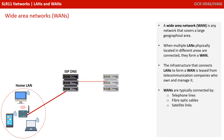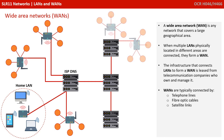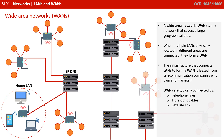A wide area network, or a WAN, is any network that covers a large geographical area. When multiple LANs physically located in different areas are connected, they form a WAN. The infrastructure that connects LANs to form a WAN typically is leased from telecommunication companies who own and manage it. WANs are typically connected by telephone lines, fibre optic cables and satellite links.